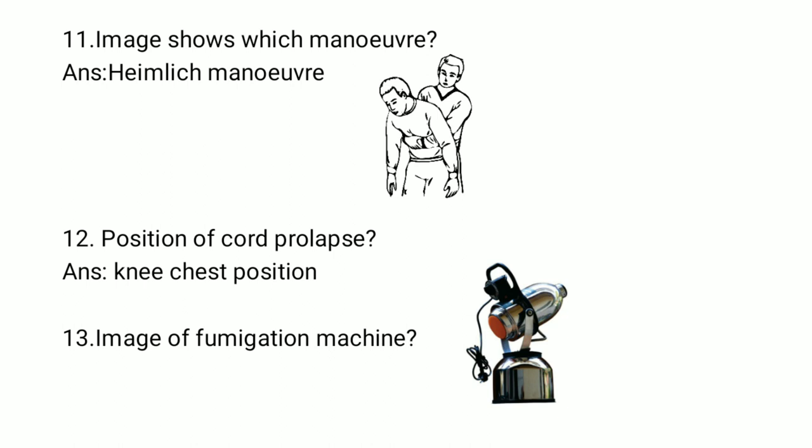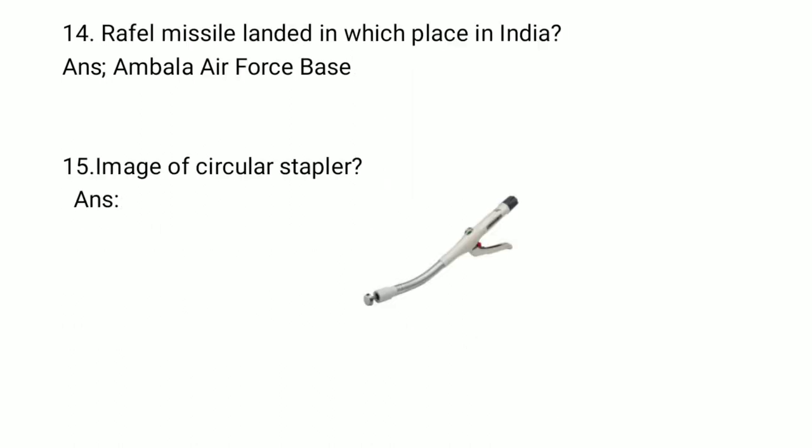Next question: What is the position used for cord prolapse? To treat cord prolapse, the answer is Knee-Chest position. Another image-based question: Identify the device shown in the image — it is a fumigation machine.